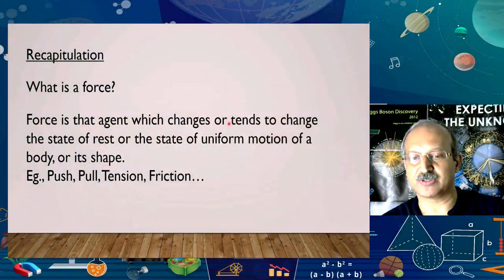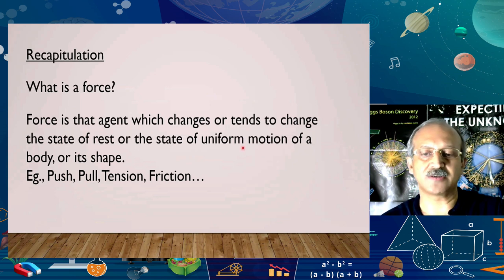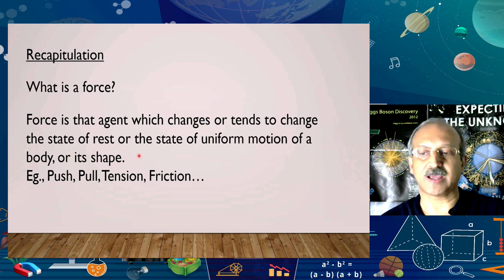We will start off with a quick recapitulation. What is the first thing that we did in the first class? We discussed about what a force is. And finally, after a lot of discussion and looking at what a force does or intends to do, we came up with this definition: force is that agent which changes or tends to change the state of rest or the state of uniform motion of a body, or its shape.